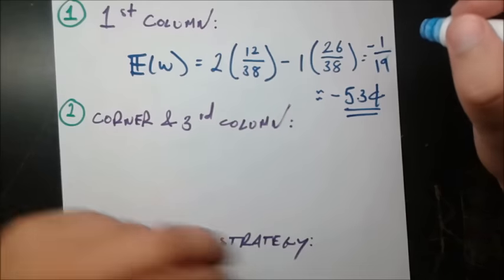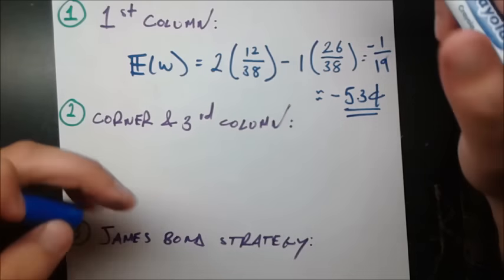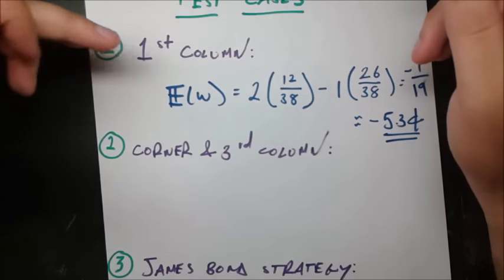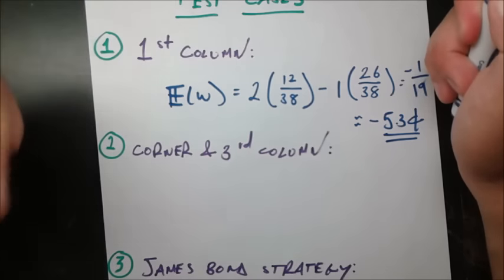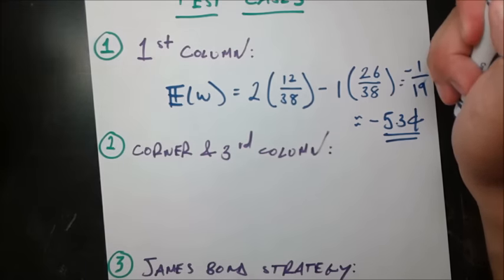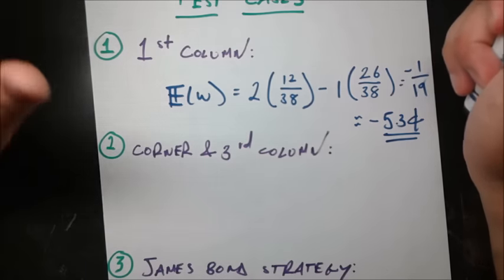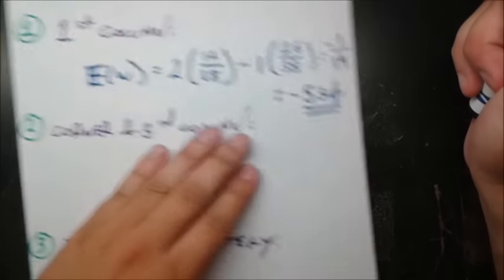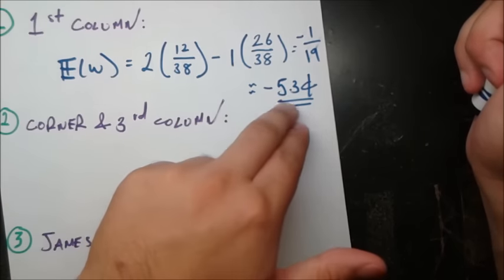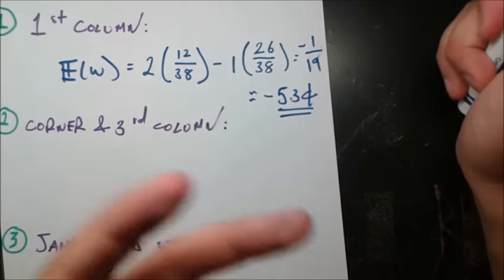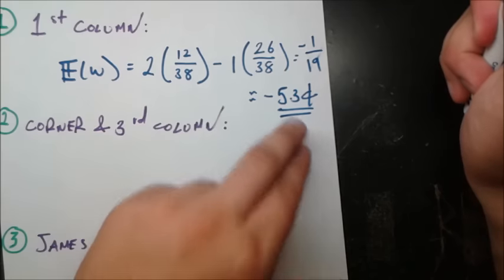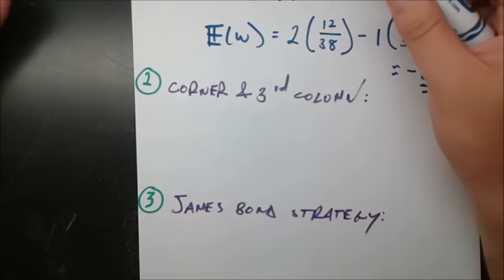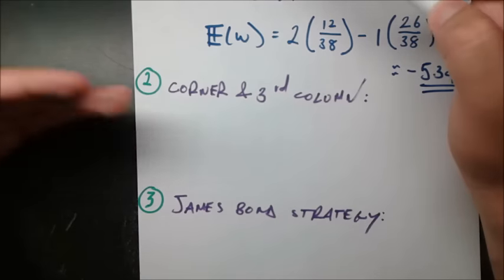Here's the first instance of that negative 5.3 cents coming up. That means if you use this betting strategy and you do this over and over again, keeping betting a dollar on the first column, in the long run on every single time you play this game, you're expecting to lose 5.3 cents. So you should not use this strategy if you're trying to make money.